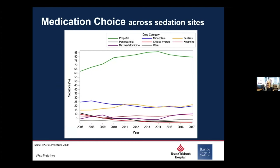Looking at what medications we're using, propofol is a large medication choice across the research consortium — keeping in mind that it does nothing for analgesia. A lot of what we do in the ER is painful, so we need to combine propofol with something else or use other modalities. Thankfully, chloral hydrate is largely going away with other medication choices. Dexmedetomidine — Precedex as the trade name — is largely increasing. So there are great opportunities for further research for different procedures by medication type.